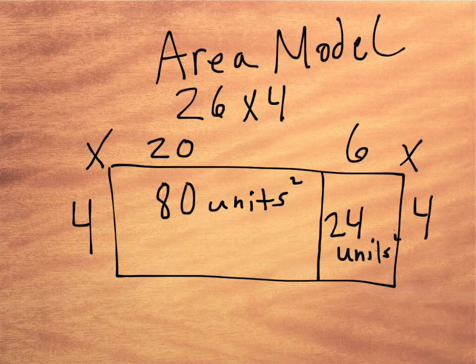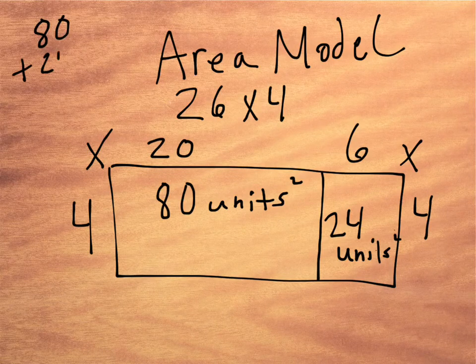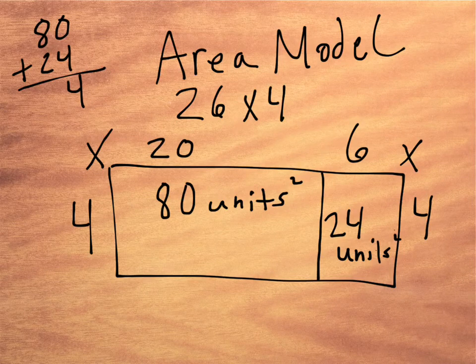So to find the area of the entire rectangle, I need to put those two portions together. So 80 plus 24. 0 plus 4 is 4. 8 plus 2 is 10.